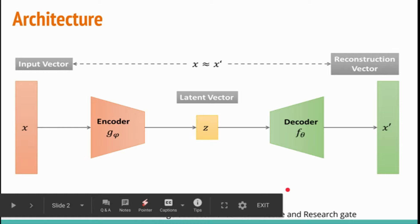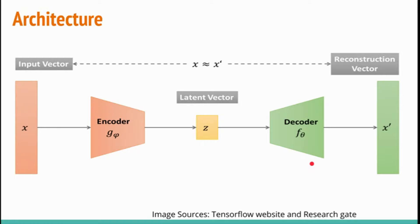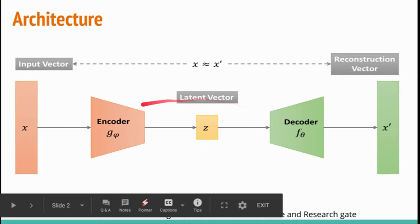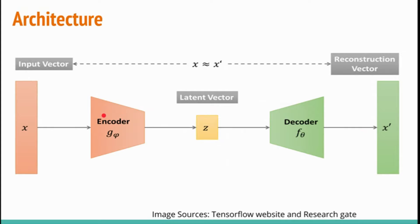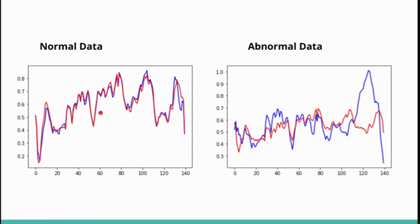As training progresses, the model weights of the encoder and decoder are updated. The encoder is essentially a downsampler and the decoder is an upsampler. These can be a feed-forward neural network, a convolutional neural network, or an LSTM. The autoencoder learns a reconstruction function that works very well with normal data — giving low reconstruction error — and works poorly with abnormal data, where reconstruction error is high.